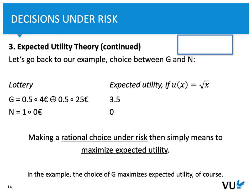Let's consider the same example once more. First, the gamble: expected utility is 3.5. If you wouldn't play, then the expected utility based on the calculations would be 0. We need to take into account that if we compare expected utilities between course members, those utilities would be different — that's an inherent characteristic of utilities. Nevertheless, we can objectively measure the expected utility for this specific lottery, which would be 3.5. We can conclude that making a rational choice under risk simply means to maximize expected utility. What will be rational behavior — gamble or not to gamble?